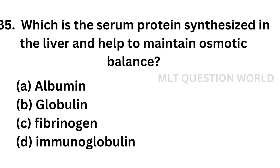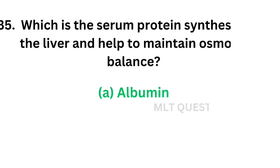Question number 35: Which serum protein is synthesized in the liver and helps to maintain osmotic balance? Option A: albumin, option B: globulin, option C: fibrinogen, option D: immunoglobulin. The correct answer is option A, albumin. The serum protein which helps to maintain osmotic balance is albumin.